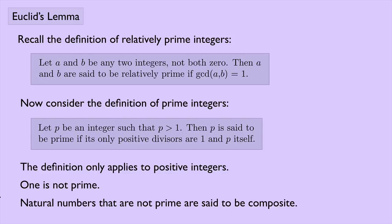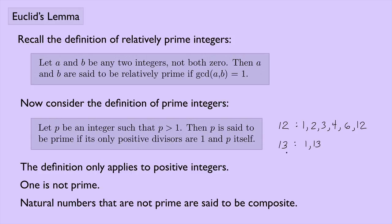Natural numbers that are not prime are said to be composite. For example, 12 has divisors 1, 2, 3, 4, 6, and 12 — so 12 is composite. On the other hand, the divisors of 13 are just 1 and 13, so 13 is prime.